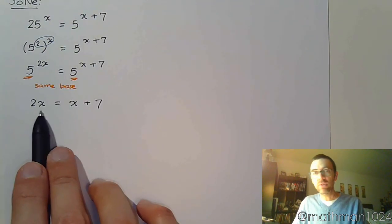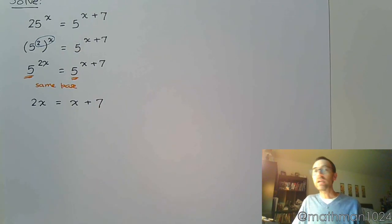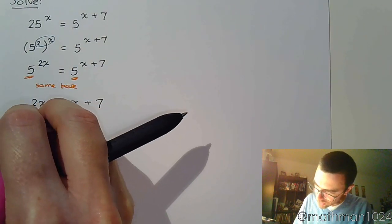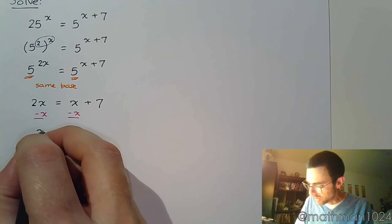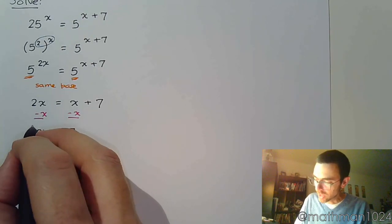We know how to solve linear equations - just get x on one side, constants on the other side. Subtract x on both sides and we find that x = 7.